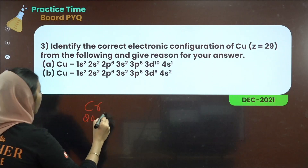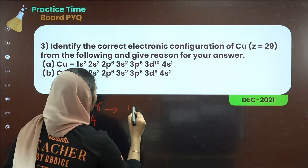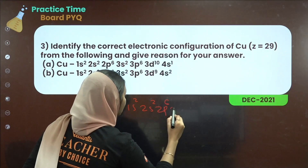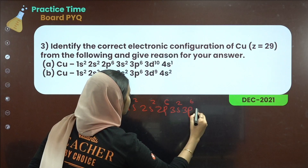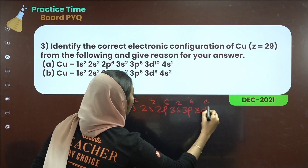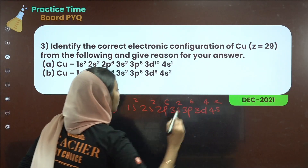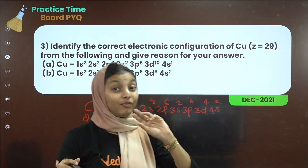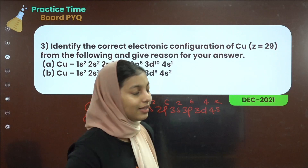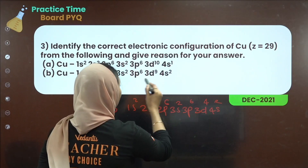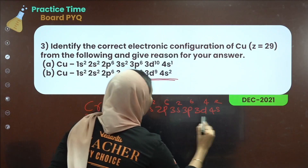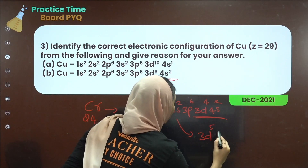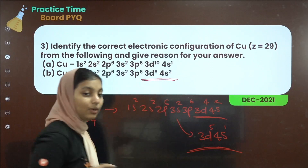Chromium, atomic number 24. Its configuration builds as: 1s2, 2s2, 2p6, 3s2, 3p6, 3d4, 4s2. But due to half-filled stability, one electron shifts from 4s to 3d, giving the configuration 3d5, 4s1. This is the correct configuration for chromium. Clear?